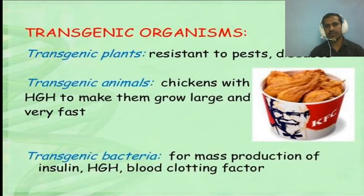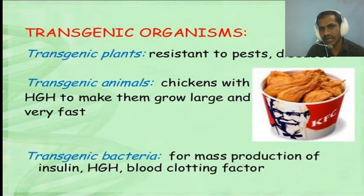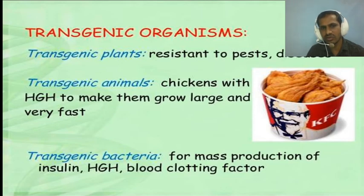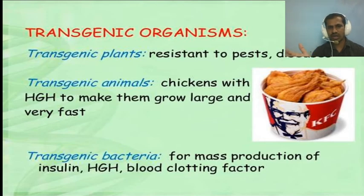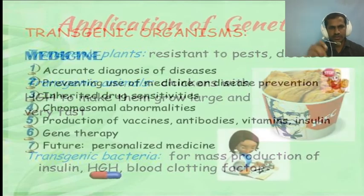Through genetics we can also produce transgenic organisms — transgenic plants resistant to pests and stress, transgenic animals such as chickens with high growth hormone to make them grow large and fast, and transgenic bacteria for mass production of insulin, blood clotting factors, and human growth hormone.